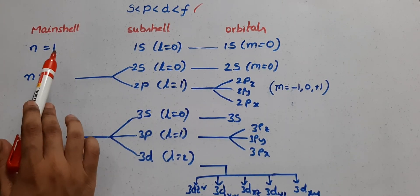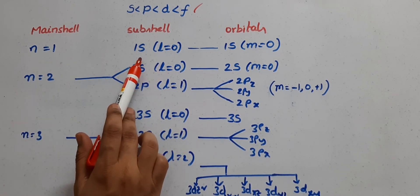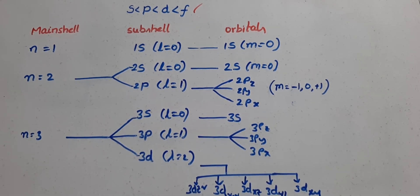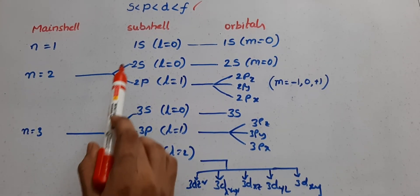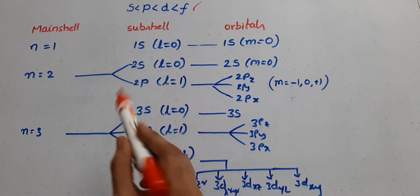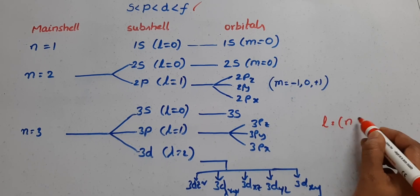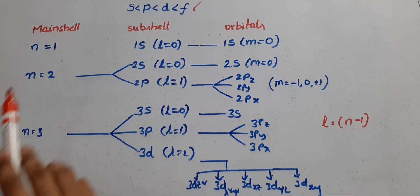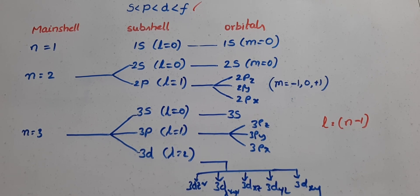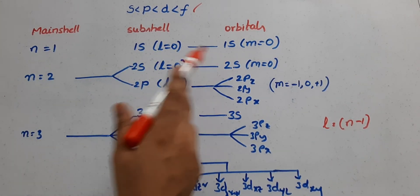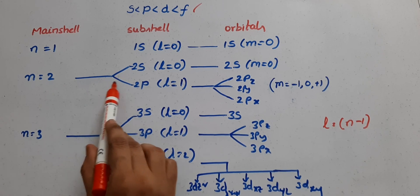Let's look at the table. Main shell n equals 1, subshell is S; subshells are S, P, D, F; main shells are K, L, M with numbers 1, 2, 3, 4. For n equals 1, the subshell is 1s, L is equal to 0 (since L = n − 1 = 0), so the orbital is 1s. The order of electron distribution in an atom fills from the first main shell.